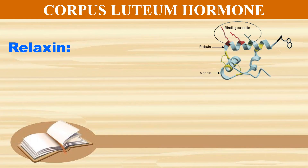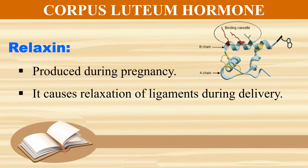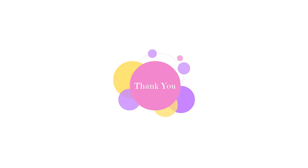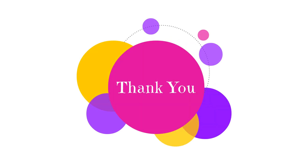The corpus luteum secretes the hormone relaxin, which is produced during pregnancy. It is formed of two chains — an A chain and a B chain — and it causes relaxation of the ligaments during delivery. So this was all about the peptide hormones. See you in the next video. Till then take care.